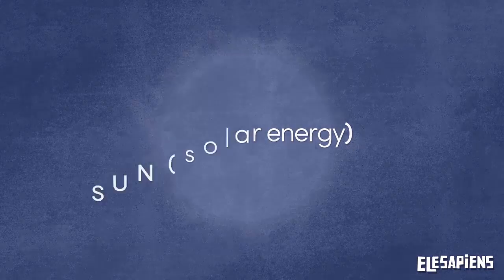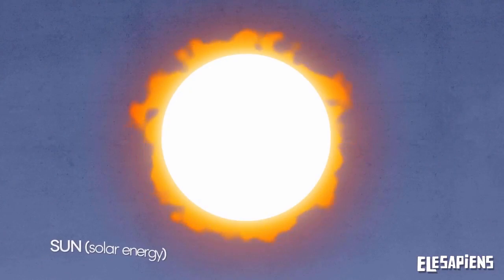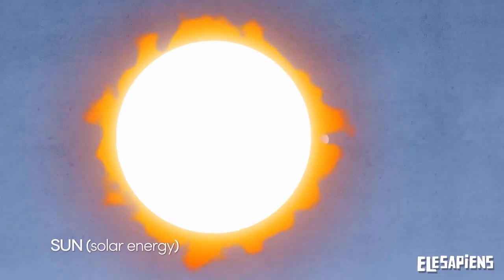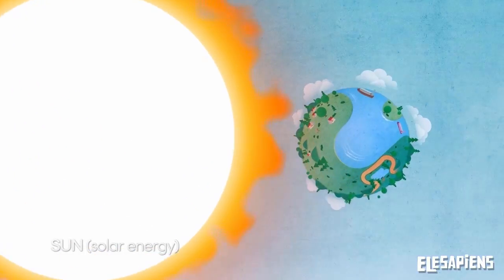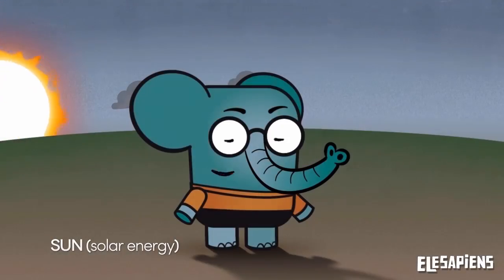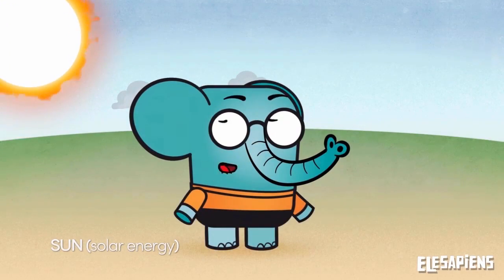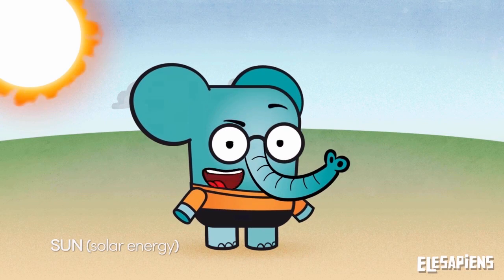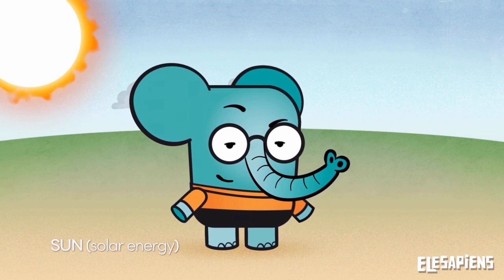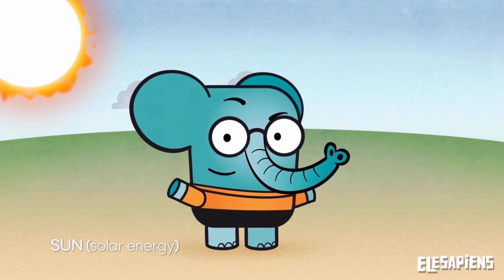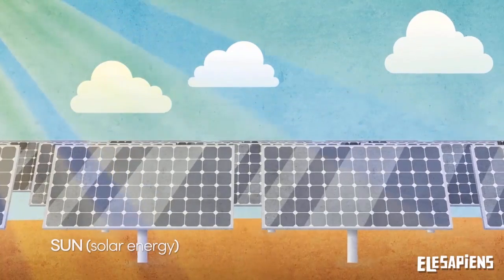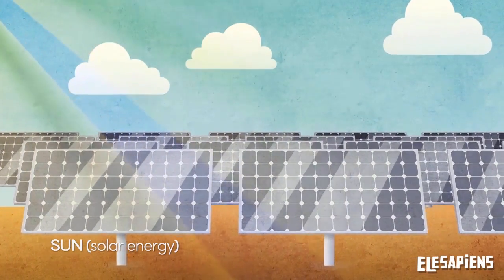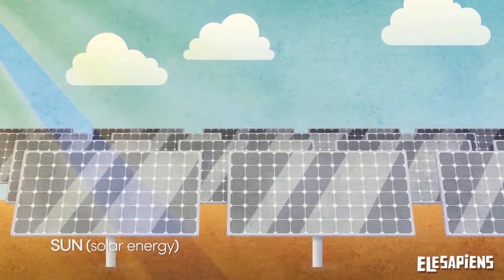The sun is Earth's original source of energy. Solar energy is the energy that comes from the rays of the sun in the form of heat and light, and we can use it in different ways. For example, light is transformed into electricity through solar panels.